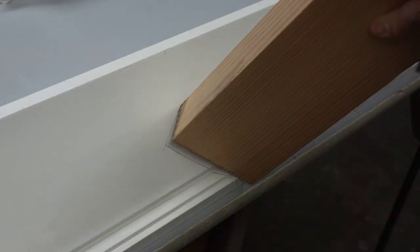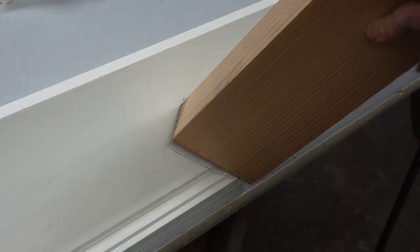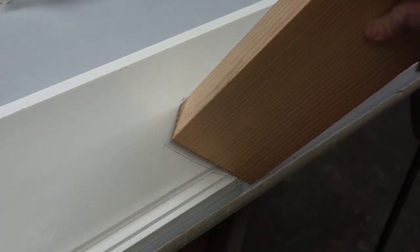Don't ask me why I'd ever need to scribe a piece of 2x3 vertical grain Douglas fir through a piece of 6 inch crown molding, but if I had to, this is how I'd do it.